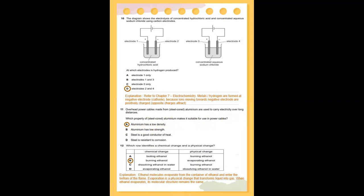Which row identifies a chemical change and a physical change? Ethanol molecules evaporate from a container of ethanol and enter the bottom of the flame. Evaporation is a physical change that transforms liquid into gas. When ethanol evaporates, its molecular structure remains the same. So, the answer is B.